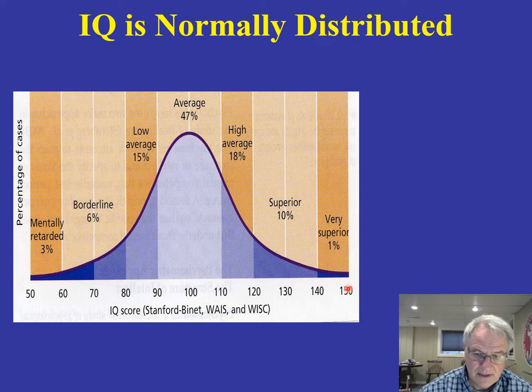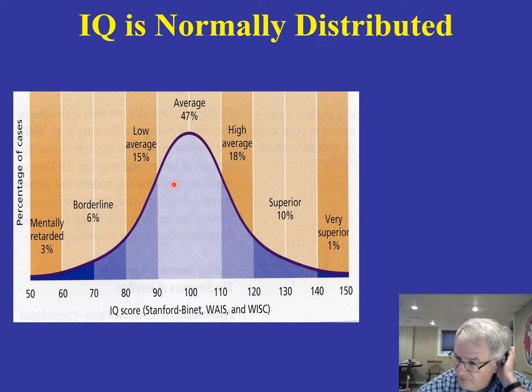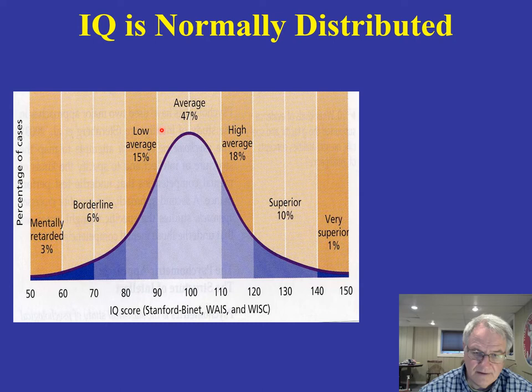This is called a bell curve, and it looks like a bell. Its primary message is that at least as assessed by these standardized kinds of tests, most individuals are near the average. IQ is normally distributed — very few individuals are extremely high or extremely low, and roughly 70% are scoring around the average. This is a figure you need to keep in mind as we go along.